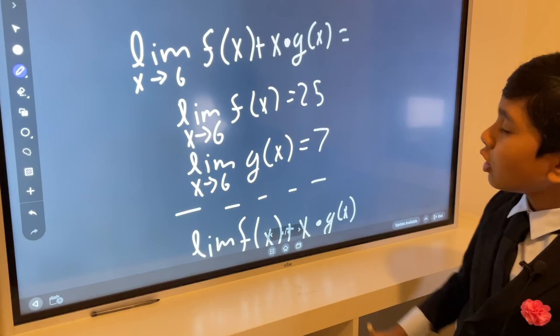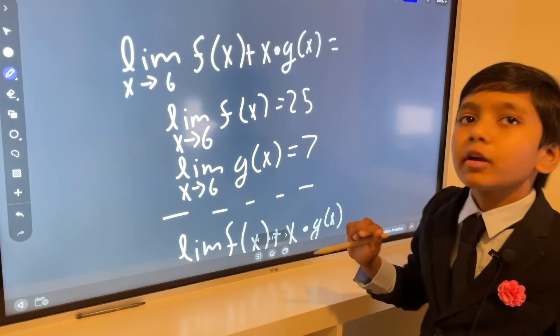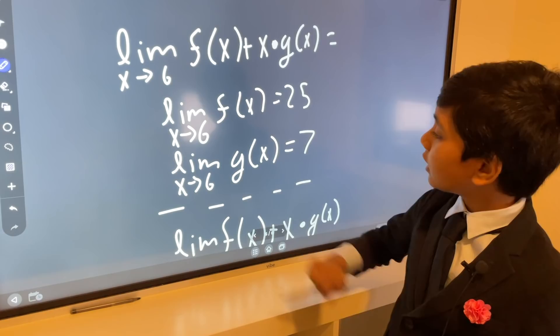And we only have two givens. The limit as x approaches 6 of f(x) is 25, and the limit as x approaches 6 of g(x) is 7.